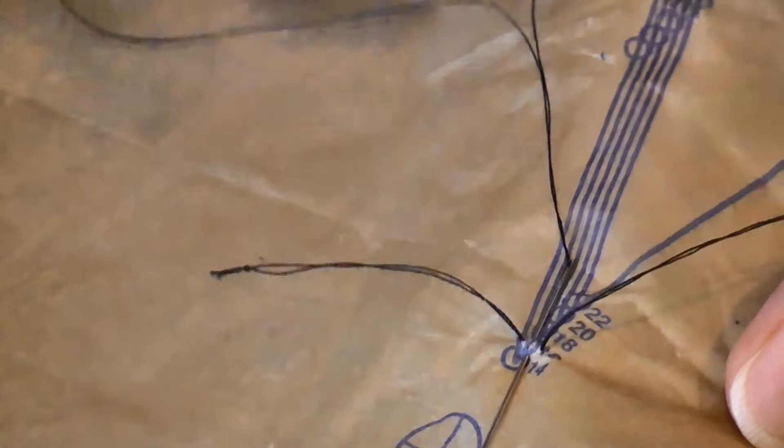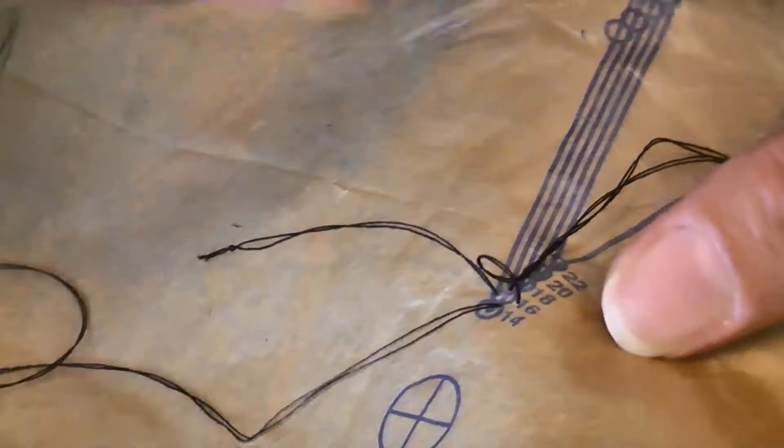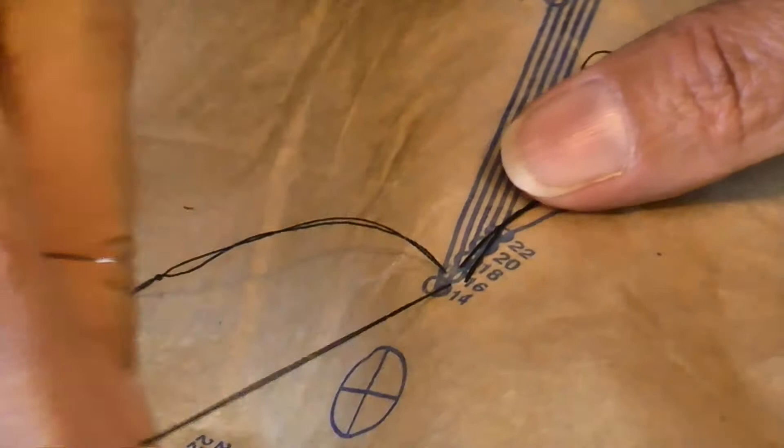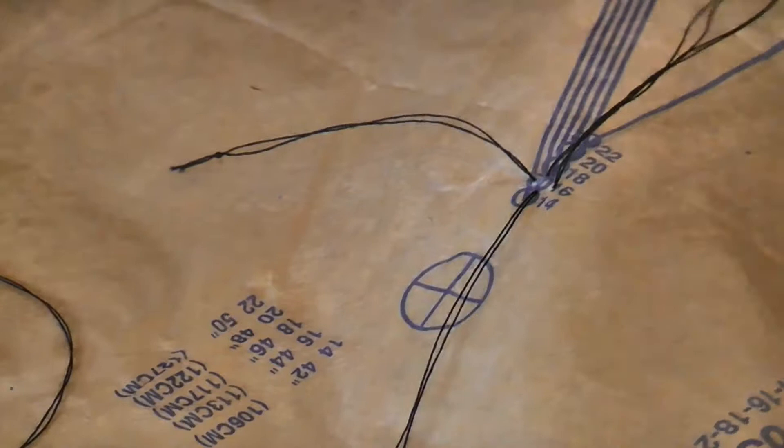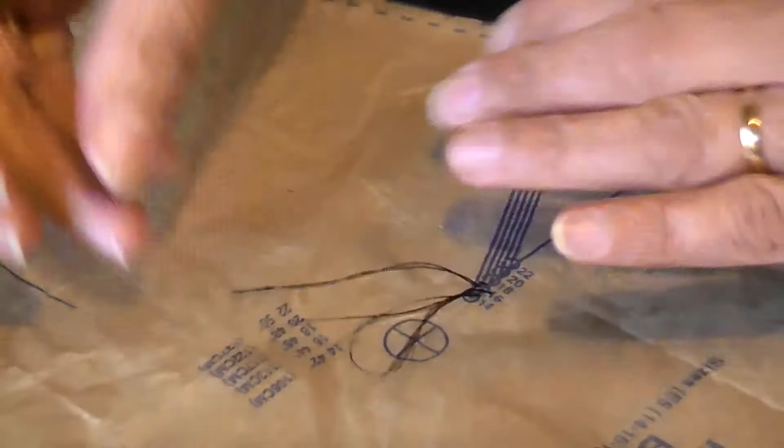So just be careful that you don't sew through yourself as well. It has been known to happen. And I'm going to leave that loop about the same length as that tail, and then leave another tail here about the same length again. And I'm just going to snip that. So what we've got is, it looks like a loop and two tails. And we're just going to leave that there. And that's actually anchored through both layers of fabric.